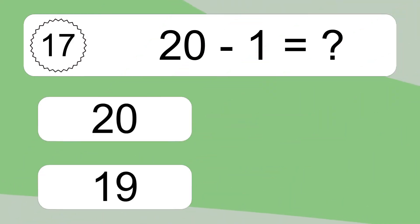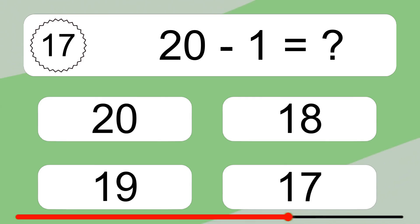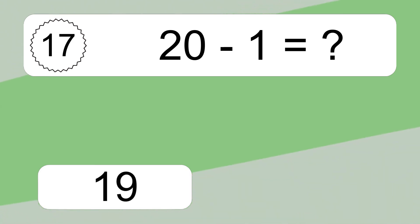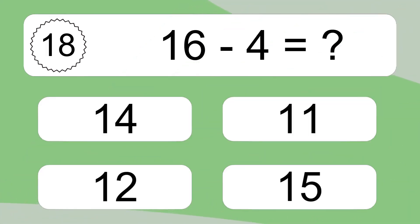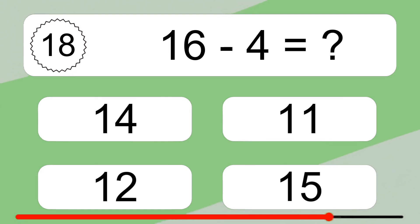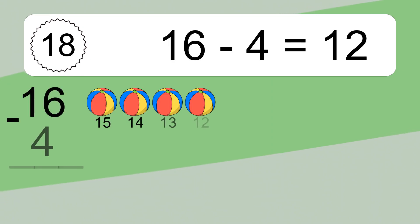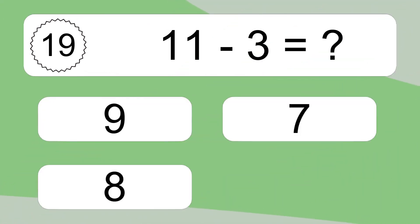20 minus 1 equals what? 20 minus 1 equals 19. Let's count it. 19. 16 minus 4 equals what? 16 minus 4 equals 12. Let's count it. 15, 14, 13, 12. 11 minus 3 equals what?